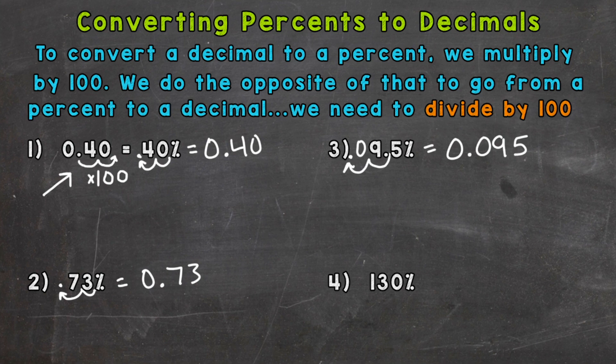Number four, we have 130%. So again, divide by 100 to get to a decimal. Move that decimal twice to the left. One, two, and the decimal is now between the one and the three. So we get one and thirty hundredths.